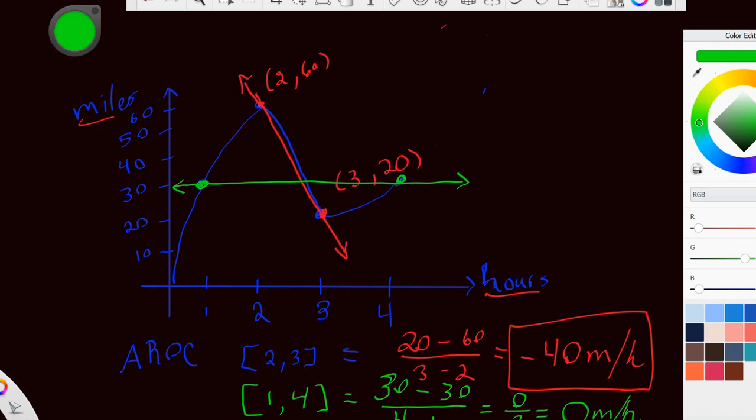So what that means is that between time one and time four, even though we definitely traveled a certain distance in the positive direction and a certain distance in the negative direction, then back the positive direction, they actually canceled each other out. So it's like we're right back where we started at hour one.